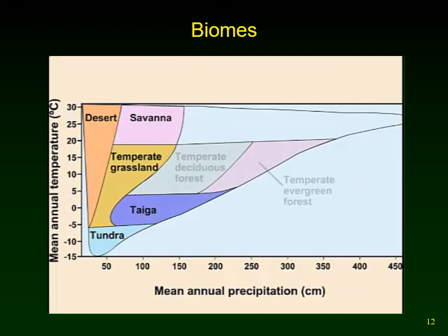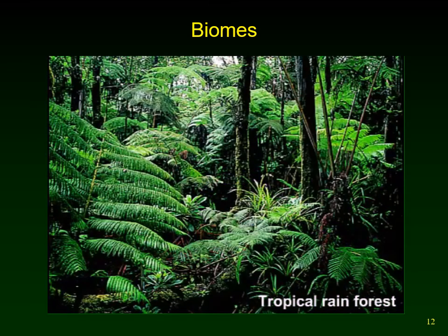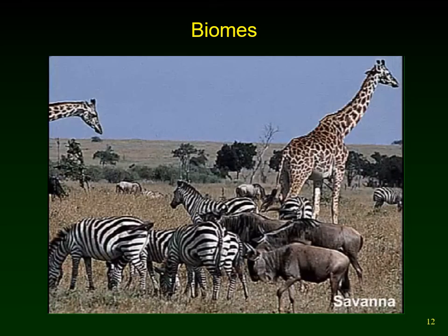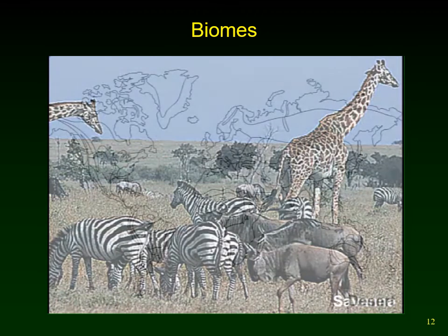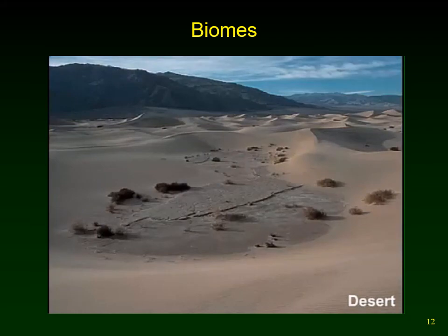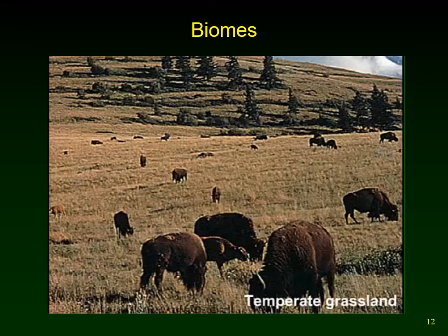Moisture and temperature are key environmental factors in determining which biomes are found where. Tropical rainforests receive 140 to 450 centimeters of rain per year and contain at least half of Earth's plant and animal species, though their soil is not nutrient-rich — most nutrients are held in the plants. Savannas are grasslands bordering the tropics that receive 75 to 125 centimeters of rain per year, characterized by alternating rainy and dry seasons.